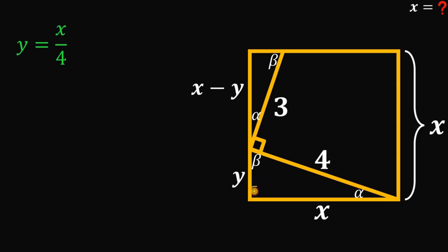Now from here, using this right triangle with a side length of 4, x, and y, using Pythagorean theorem, we have x squared plus y squared equals 4 squared. But we know that y is x over 4. So we can replace this y with x over 4.